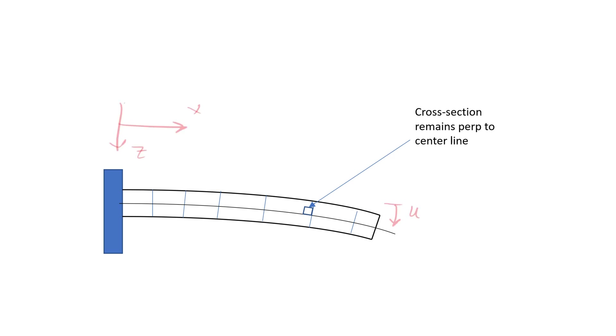Moreover, this type of beam has only a single degree of freedom, which is a function of x running along the length of the beam.